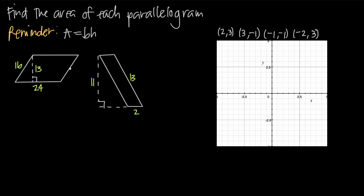When we want to find the area of a parallelogram, we always use this formula. The base B is straightforward. In this first example, the base is 24 — the length of the bottom side is 24. We can also say the top side is 24, because opposite sides are congruent and must have the same length.